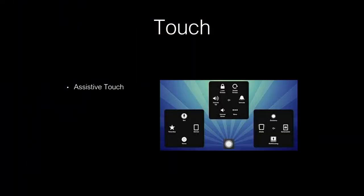On an iPhone there's an accessibility feature called Assistive Touch. When you turn it on, a little button appears on your screen that you can move anywhere by touching and dragging it. When you push it, a menu comes up. You choose Device and then a menu lets you use on-screen buttons to turn the sound up or down. For many people, pushing the small buttons on the side of the phone is hard — this eliminates that need and lets you use buttons on the screen instead.